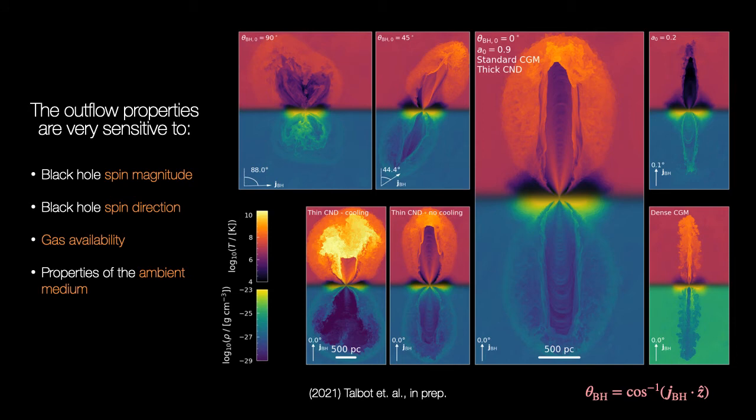In the work I'm just finishing writing up at the moment, we expanded on this and looked at a wider range of initial black hole spin magnitudes, spin directions, as well as different feeding regimes and different pressurizations of the ambient medium. As we can see from these temperature and density slices, the properties of the jet-driven outflow is very dependent on the black hole spin magnitude and direction, as well as the mass inflow rates and the CGM properties.